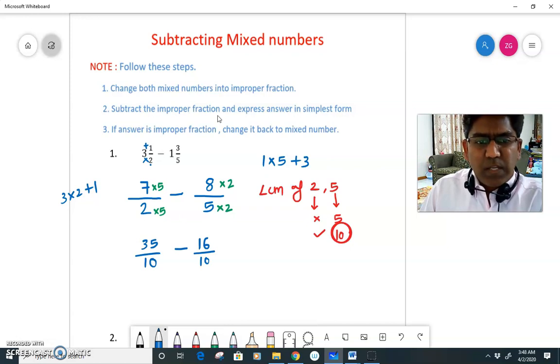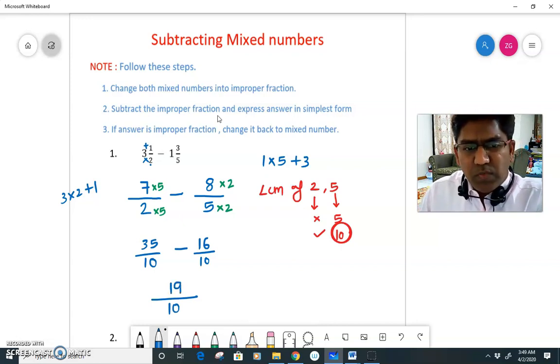Now since they are like fractions, I can subtract the numerators. Denominator stays the same. 35 minus 16 gives me 19. Now this fraction is in simplest form. You cannot reduce it further.